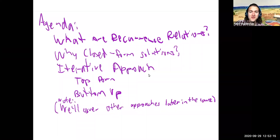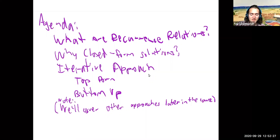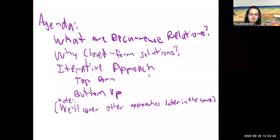Hi everyone. Today I'll be talking about recurrence relations and looking through solving them with an inductive approach. I will first talk about what recurrence relations are, why we want to have closed-form solutions in the first place, and then go through both the top-down and bottom-up approaches of solving them iteratively. We will cover other approaches later in the class, but iterative approaches are really good when you have a recurrence relation referring to just the term before it.